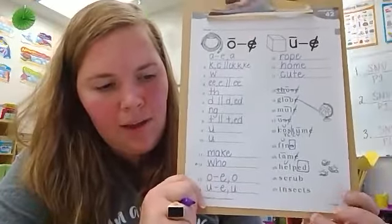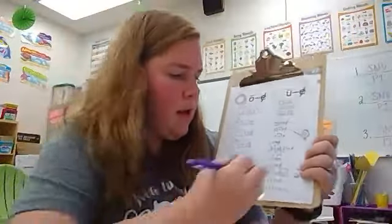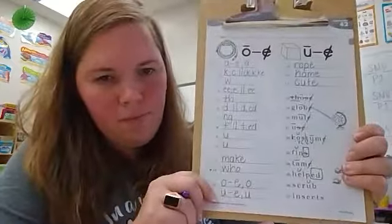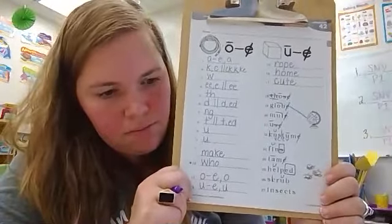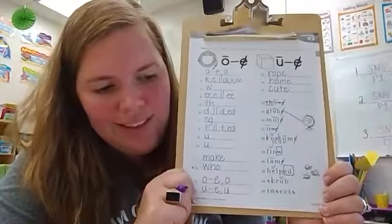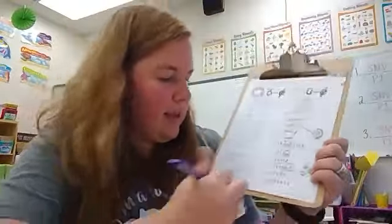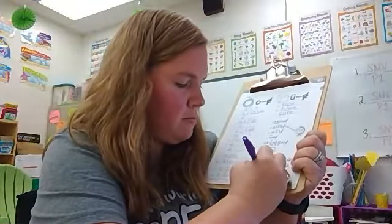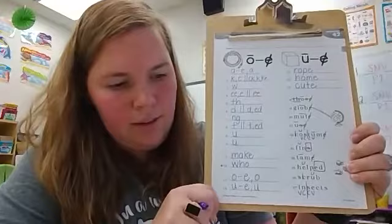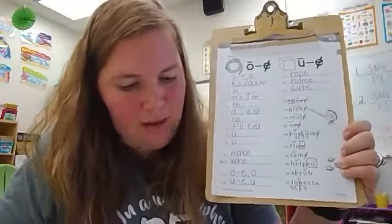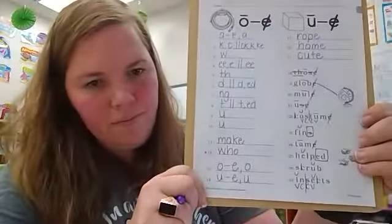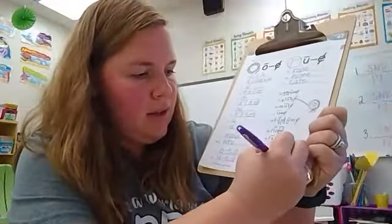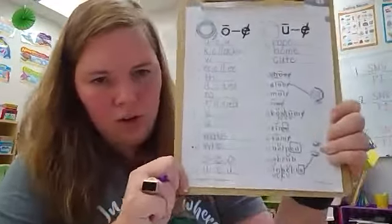Number 26 is scrub with short U. The C makes the K sound in scrub. The last word we have is insects. I see VCCV pattern. Both vowels are short, and it makes the S sound with the S suffix. This is a picture showing insects.